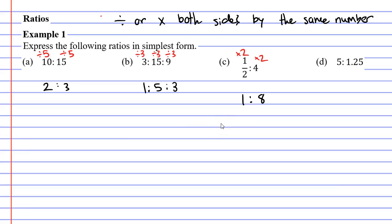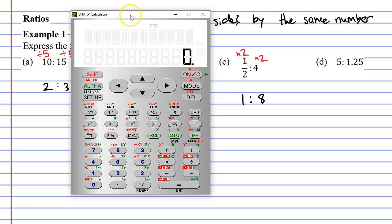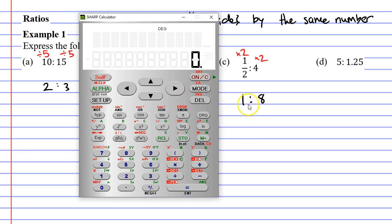Sometimes we're not sure if we've done enough to simplify our fraction. If you're not sure, bring up your calculator and check it. 1 to 8 can be written as 1, ABC, 8. Notice when I press the equal sign, it remains the same. That means it's been simplified as much as possible. I can't do any more to this.